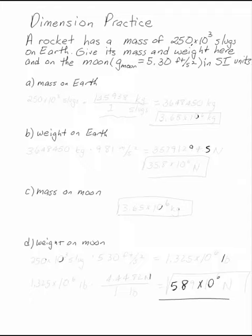A rocket has a mass of 250 times 10 to the third slugs on Earth. Give its mass and weight here and on the moon, where the gravity of the moon is 5.3 feet per second squared in SI units.